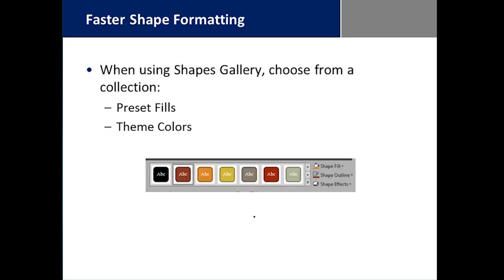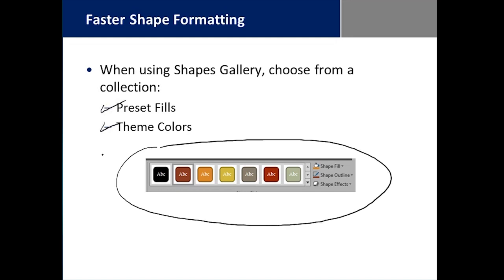In Word, we have the Shapes Gallery. When you choose a shape from the collection, you have a bunch of preset fills and theme colors to work with. The point is to be able to format shapes much faster than previously, and have them all match the color combinations of the color palette already chosen as a default.